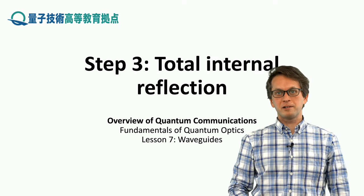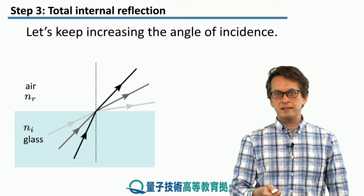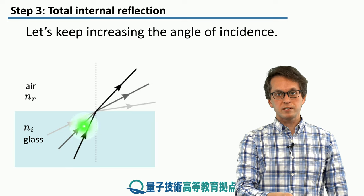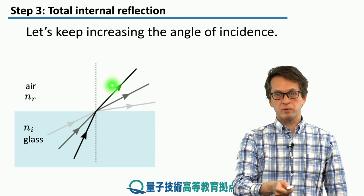Step 3: Total internal reflection. In the previous step, we have seen that if light is incident on a surface and traveling from a more dense medium into a less dense medium, then it gets bent away from the normal axis.